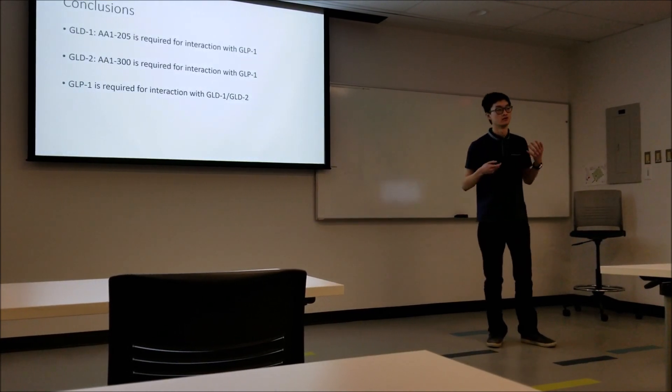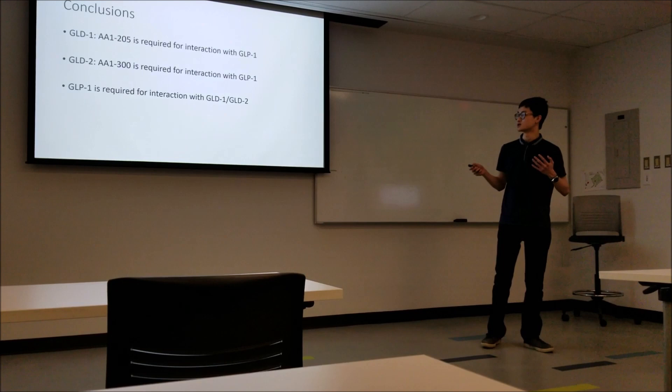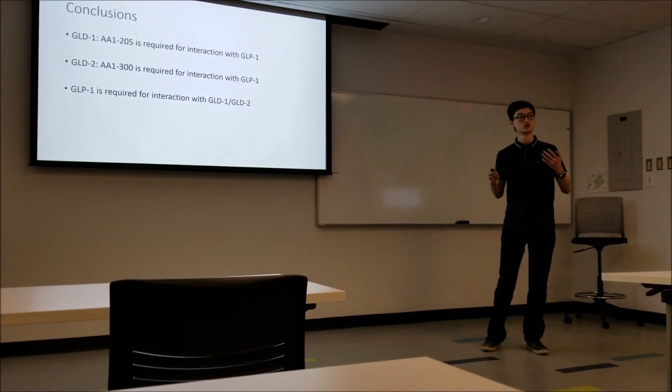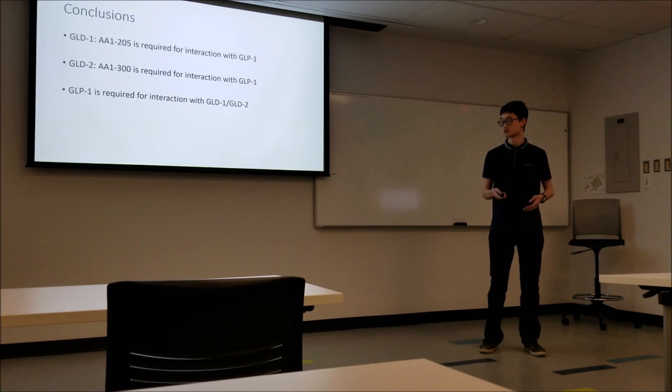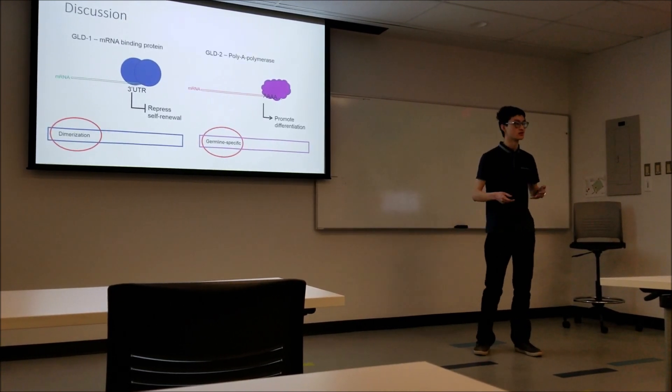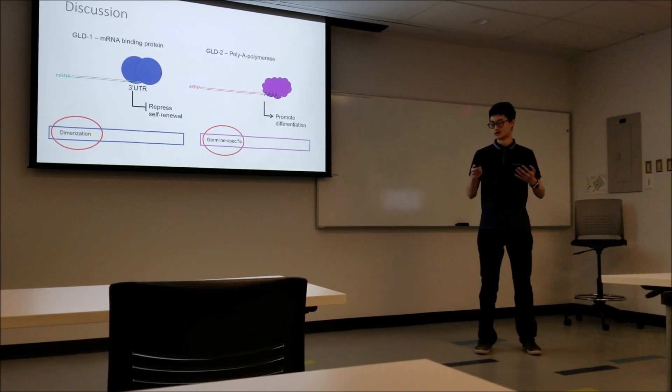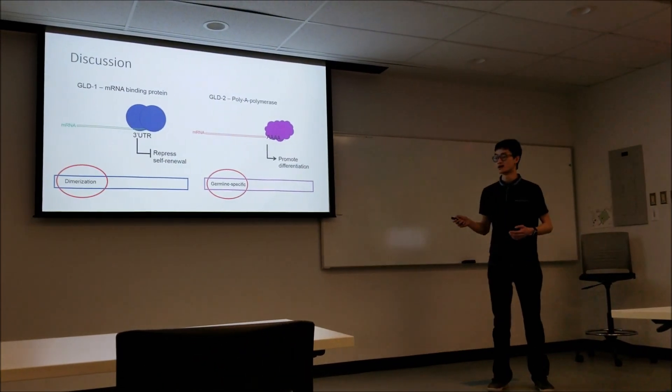So for GLD1, we've got it down to 1 to 205. For GLD2, we have it down to the first 300. And of course we need GLP1 for interaction with GLD1 and GLD2. So I've been saying GLD1, GLD2, but what does this actually mean? What does this look like in the worm? Let's take a look.